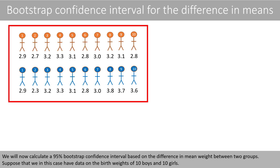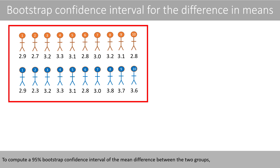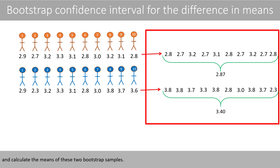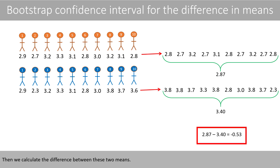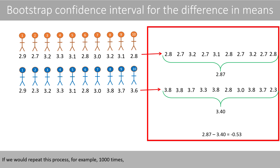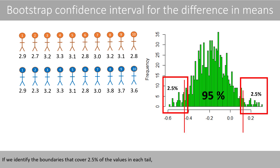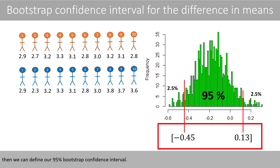We will now calculate a 95% bootstrap confidence interval based on the difference in mean weight between two groups. Suppose that we have data on birth weights of 10 boys and 10 girls. To compute a 95% bootstrap confidence interval of the mean difference between the two groups, we can take a bootstrap from each group and calculate the means of these two bootstrap samples. Then we calculate the difference between these two means. If we repeat this process 1,000 times, we will have 1,000 values representing the differences in means between the two groups. If we identify the boundaries that cover 2.5% of the values in each tail, we can define our 95% bootstrap confidence interval.